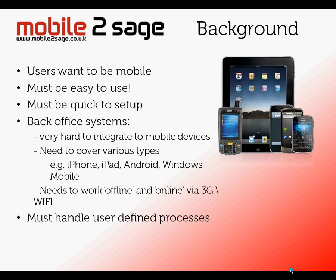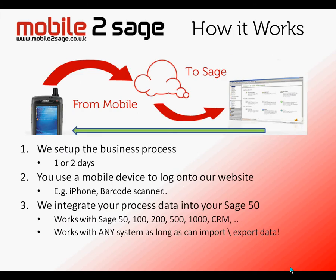The user needs to define how they want to work. So how does it work? It's pretty simple really. We set up the business process for you and that's normally a one- or two-day job. You then pick your mobile device and log on to our website — from an iPhone or a barcode scanner — which downloads the application onto your mobile device. We then integrate the process data captured from the mobile device back into your Sage. In this case I'm looking at Sage 50, but it works with 100, 200, 500, 1000, and CRM — in fact it works with any system as long as we can export and import data into it.